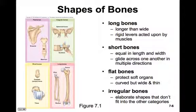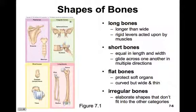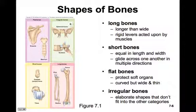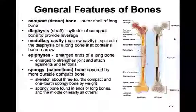Flat bones usually protect soft organs — things like the scapula or sternum. They're often curved but wide and very thin. The bones of the skull are flat bones. Irregular bones have elaborate shapes that don't fit into the other categories. The sphenoid bone in the skull and the vertebrae of the vertebral column are examples of irregular bones.